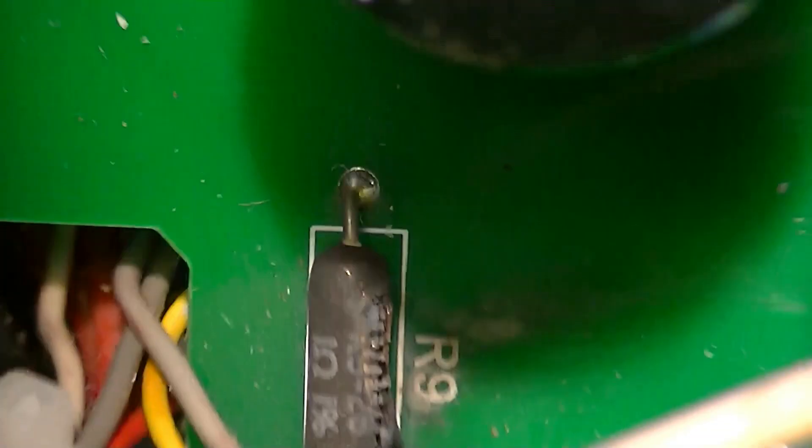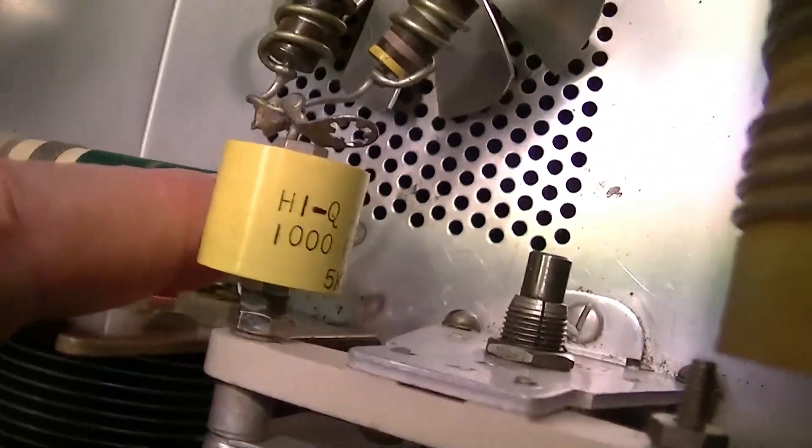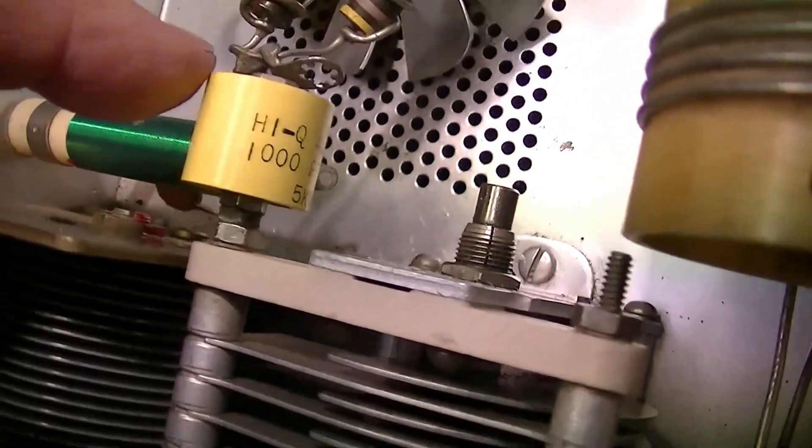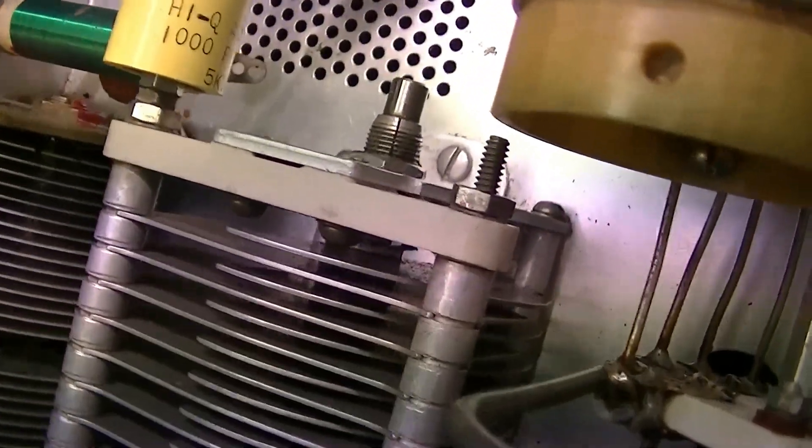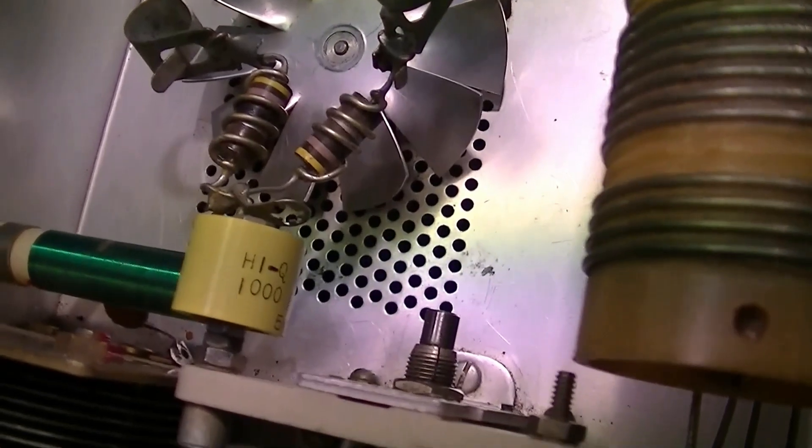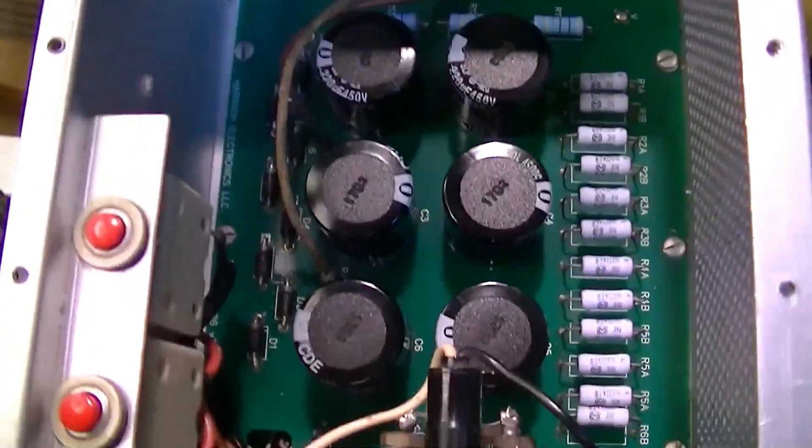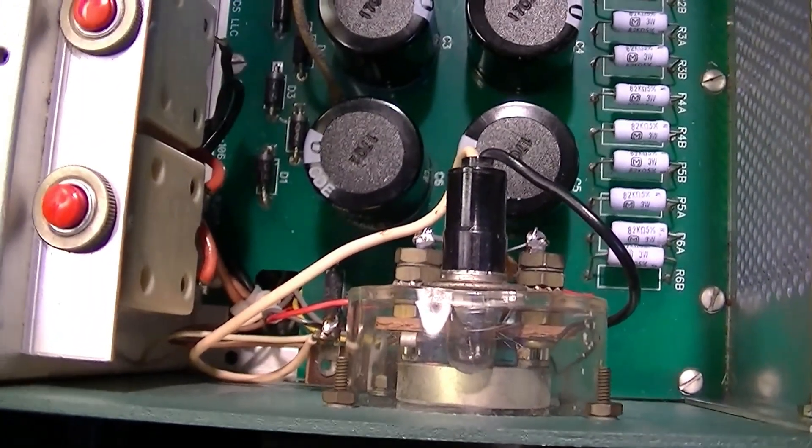What we did is we lifted the high voltage here where it comes off of the RF choke, separating it entirely from the RF section of the amplifier, and that isolated the problem to the power supply and metering circuit.